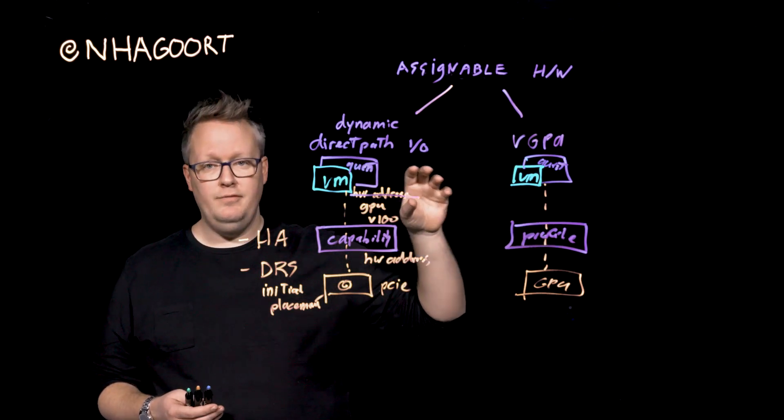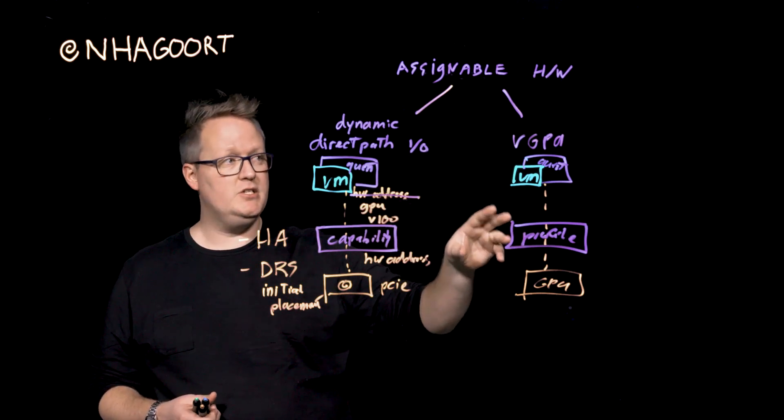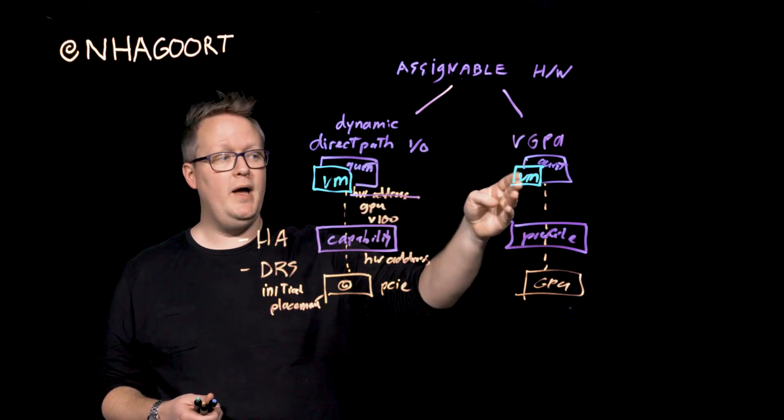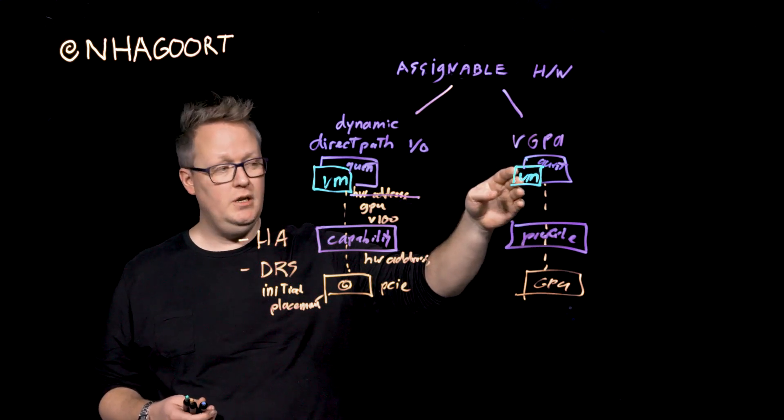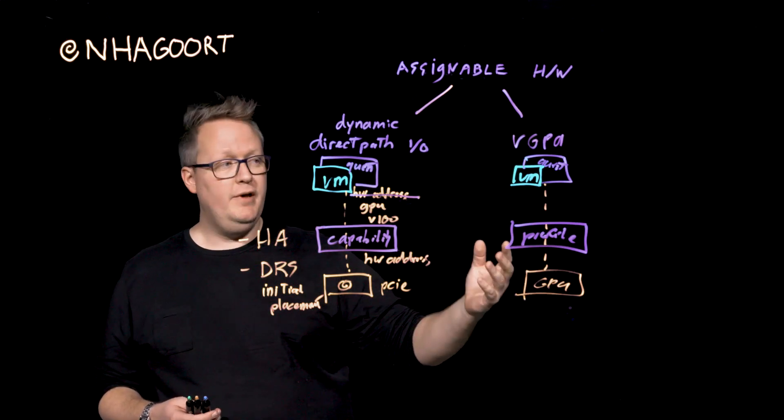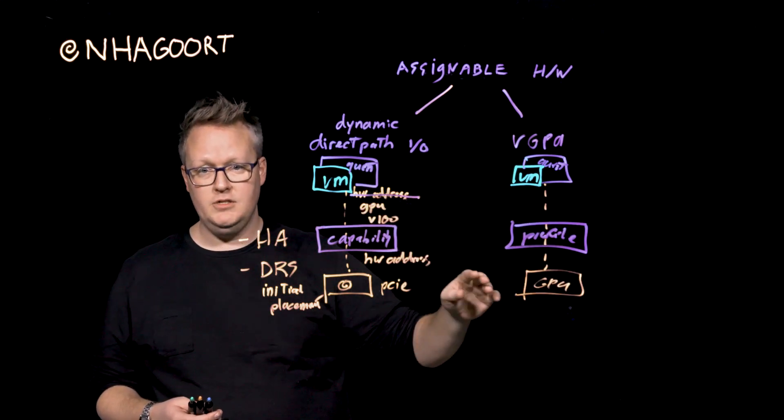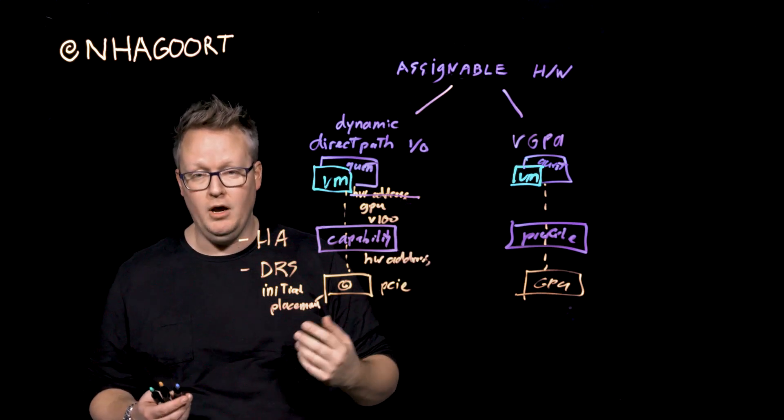Now, again, in vSphere 7, we will take care that the initial placement is done for a vGPU. So whenever you have a specific profile set up for this specific virtual machine, DRS will now look at, hey, that profile, is it available at all the hosts, and where can I basically register this virtual machine and power it on?